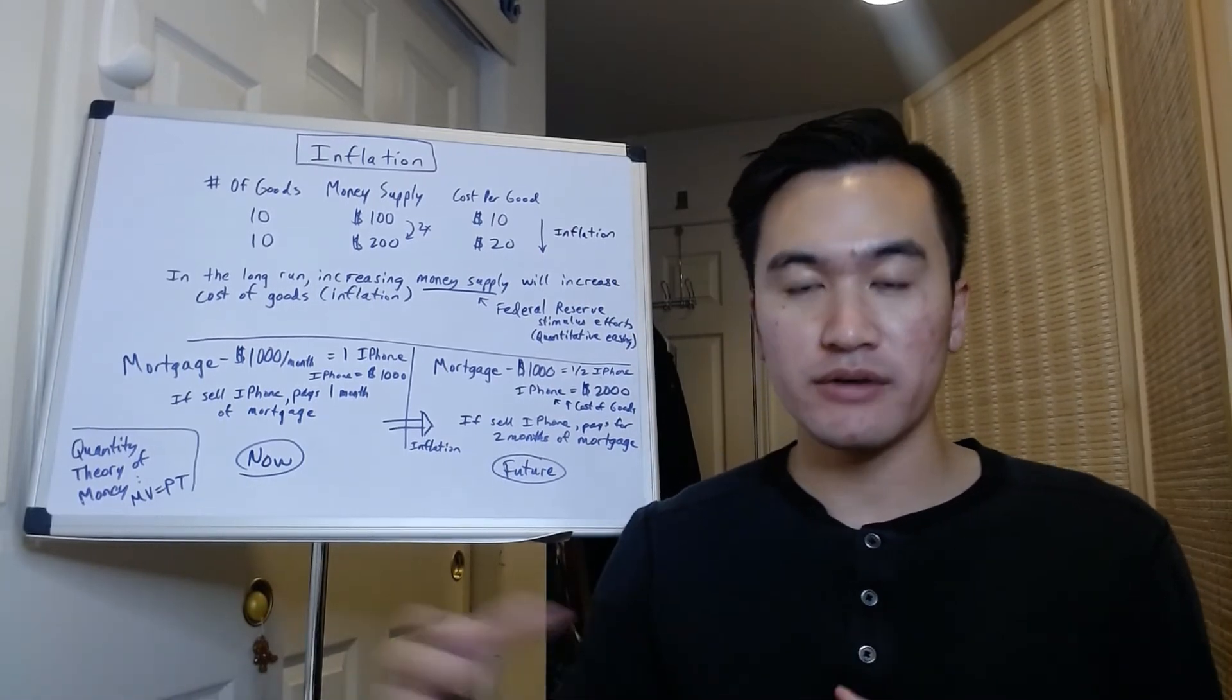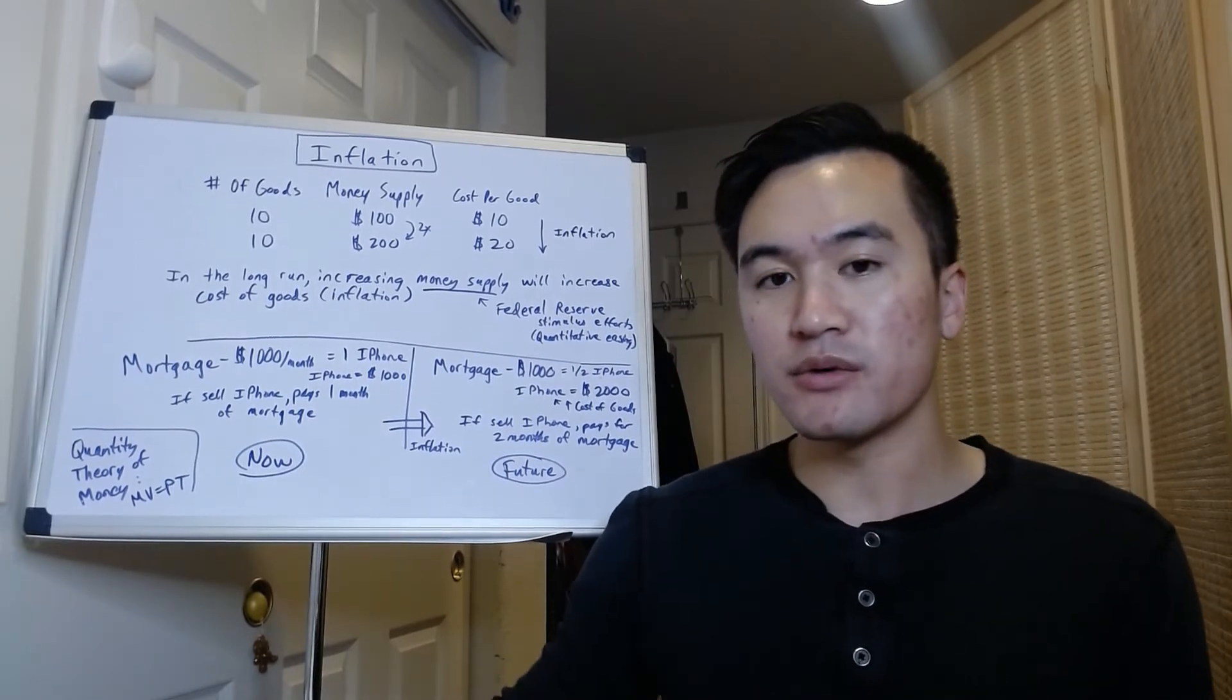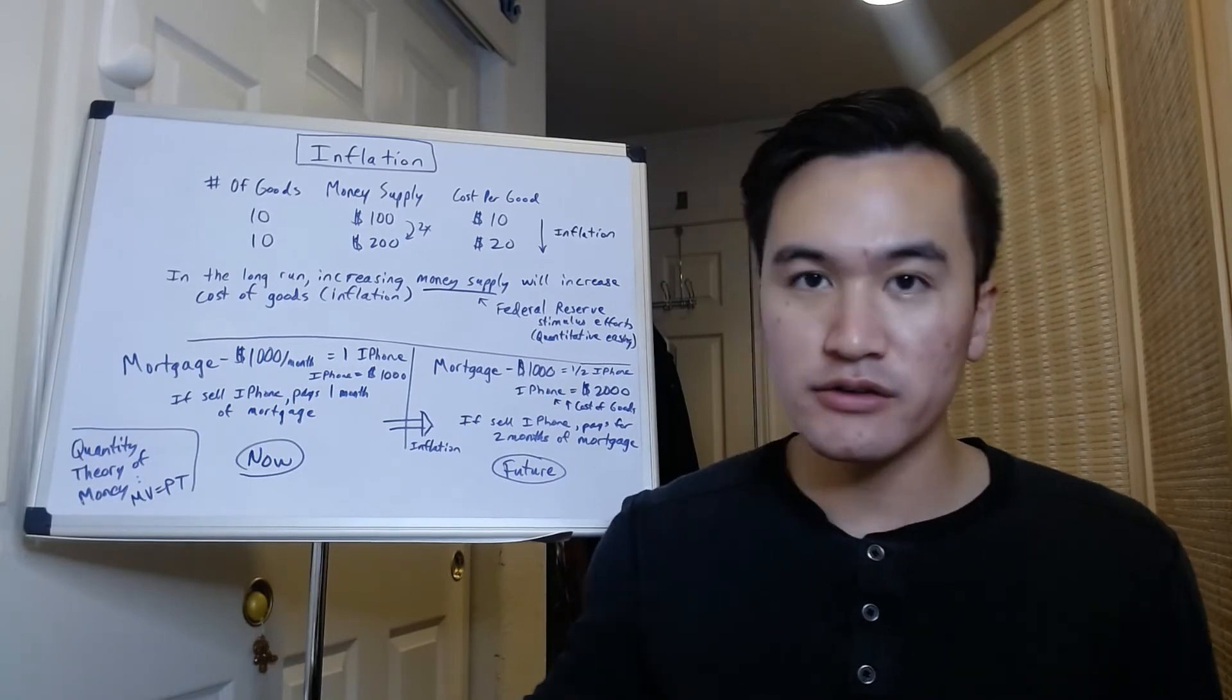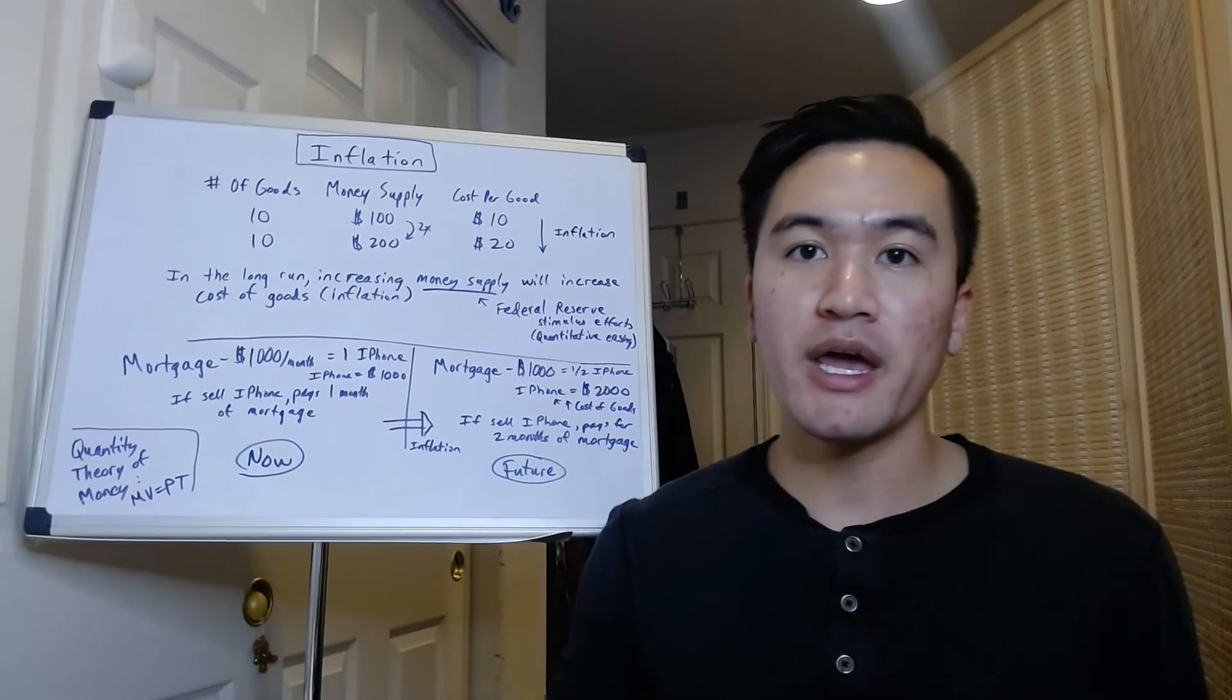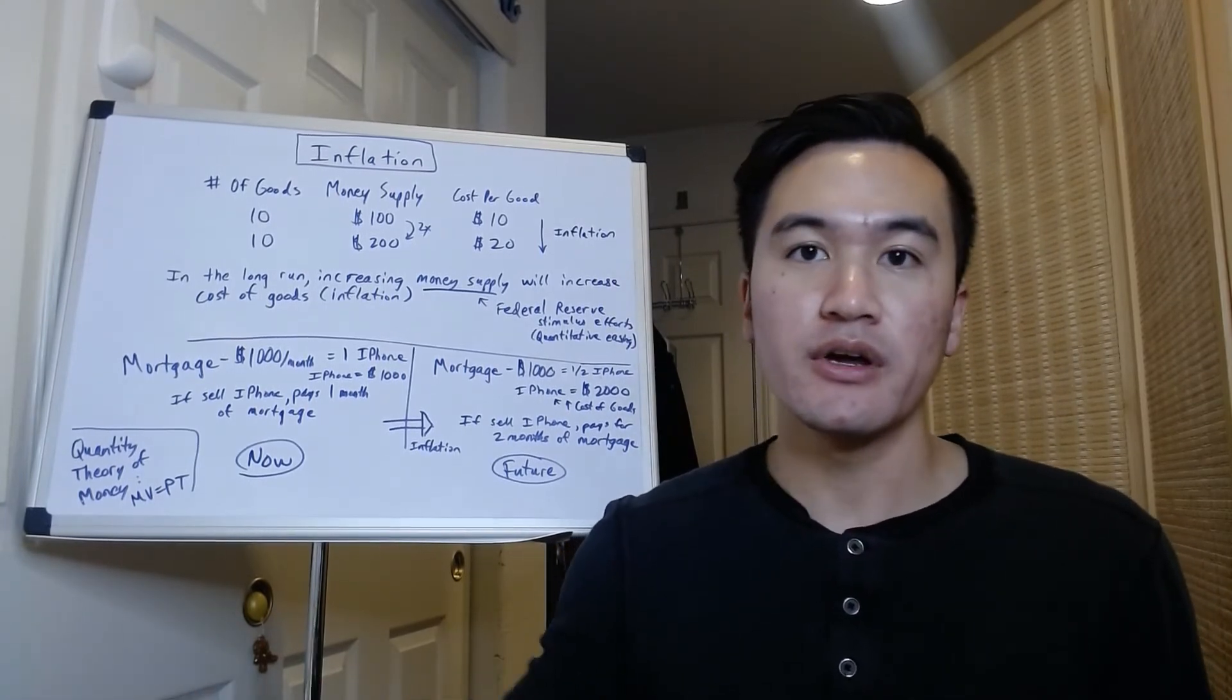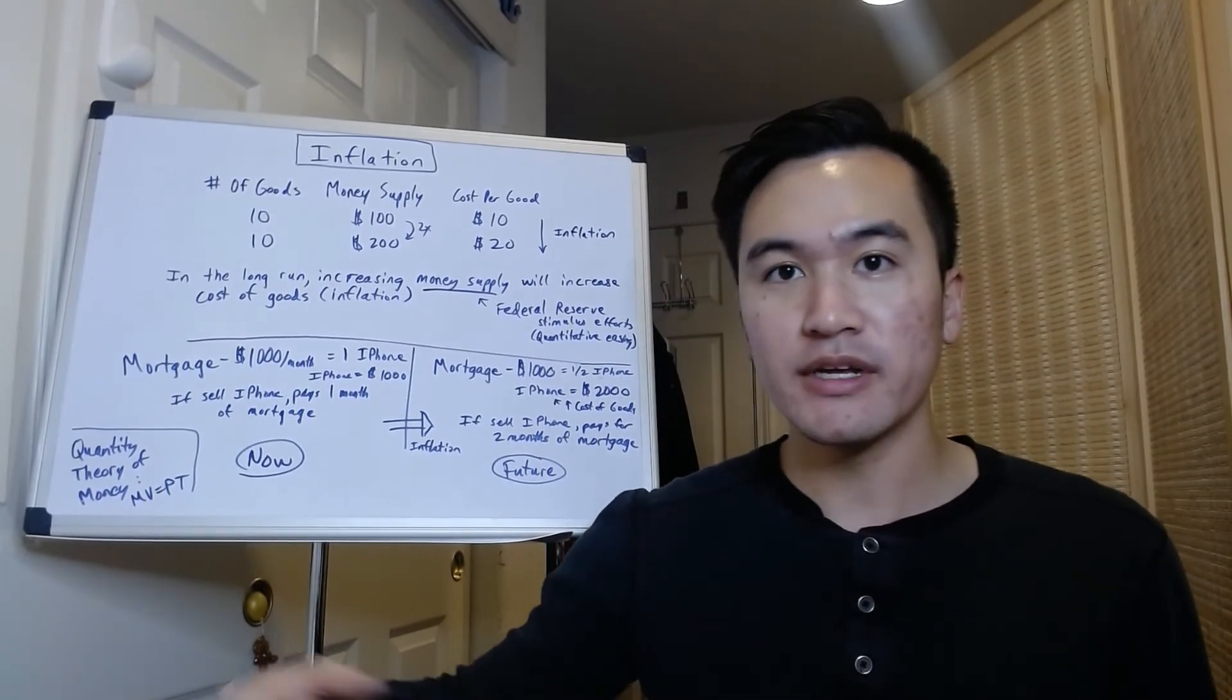So you can see that basically what's happening here is you're fixing your mortgage—you have a fixed interest rate, you have a fixed payment. But because of inflation, you're paying back your mortgage in cheaper dollars in the future.